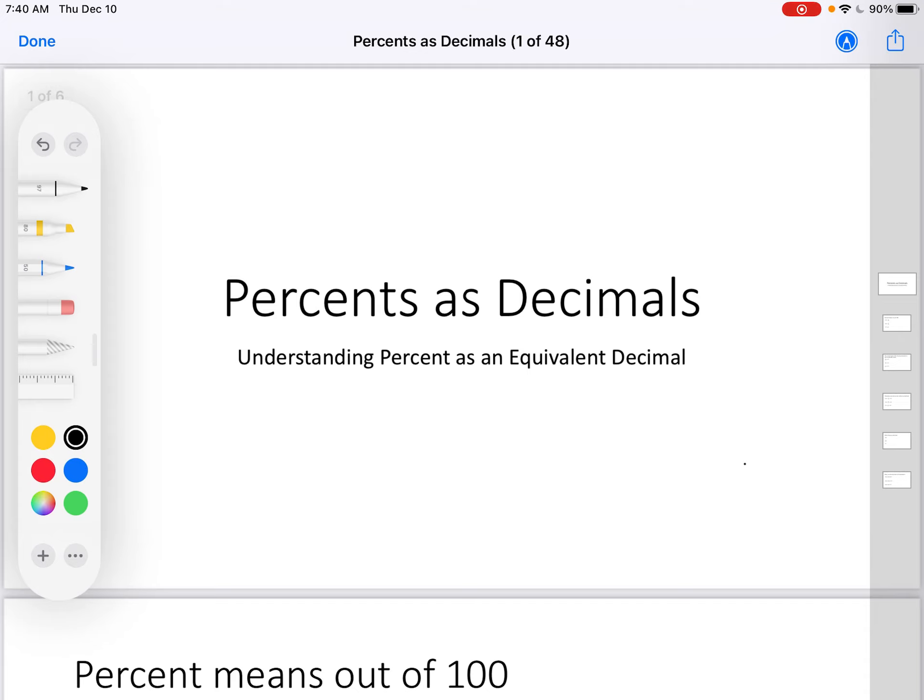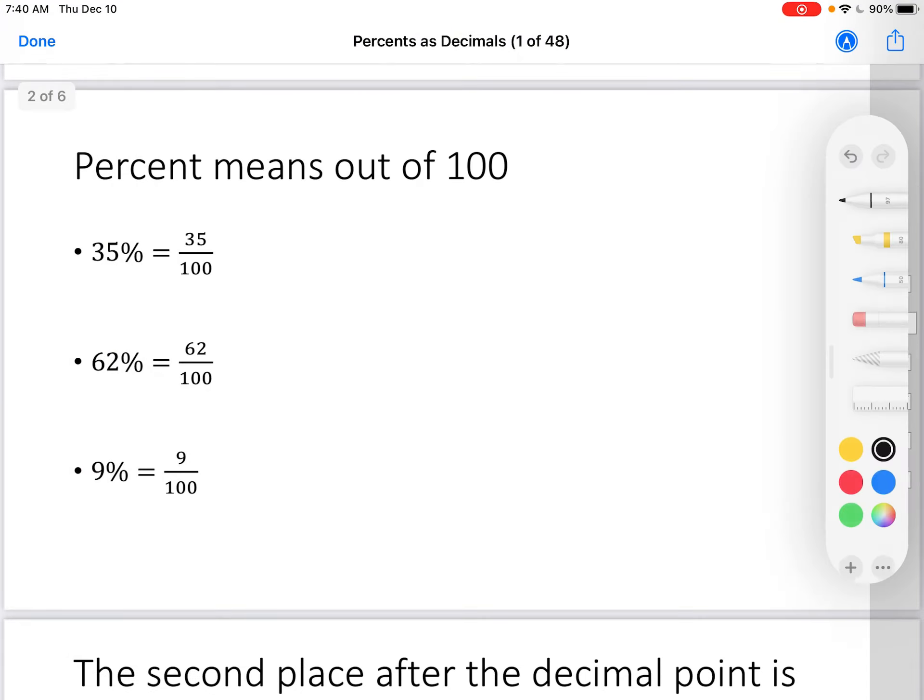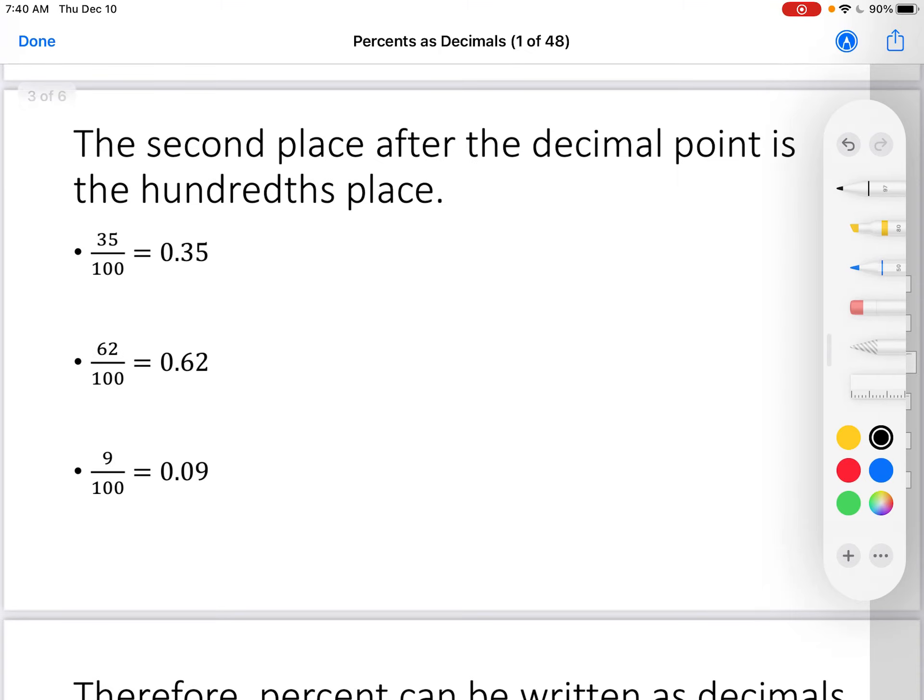First thing, remember, percent means out of 100. So 35% is 35 out of 100, 62% is 62 out of 100, 9% is 9 out of 100. But also remember that the second place after the decimal point is the hundredths place. There's the decimal point, there's the tenths place, there's the hundredths place.